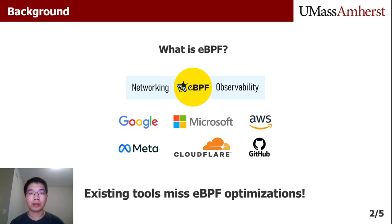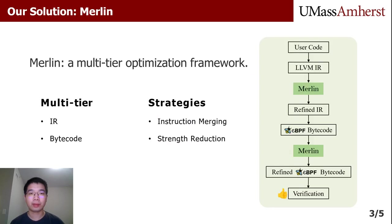However, we find that existing tools miss eBPF optimizations. In response, we introduce Merlin. Merlin is designed to optimize at both IR and backend level with two main strategies: instruction merging and strength reduction.